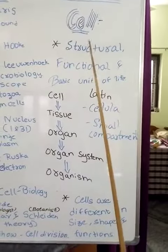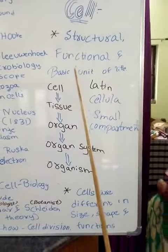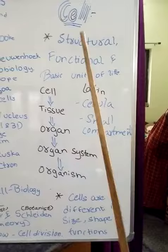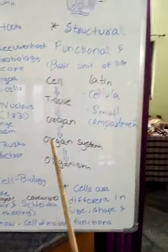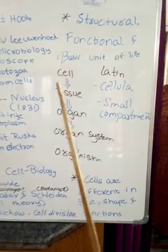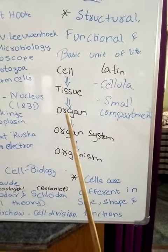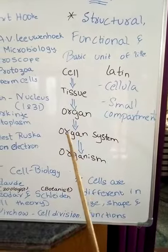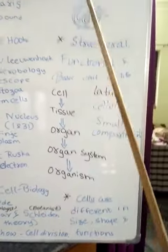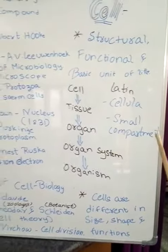The cell is the structural, functional, and basic unit of life. It is capable of carrying out all living functions. A group of cells forms tissue, a group of tissues forms an organ, a group of organs forms an organ system, and a group of organ systems forms an organism.